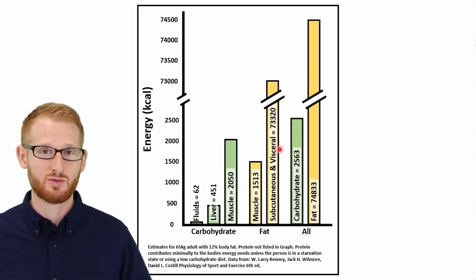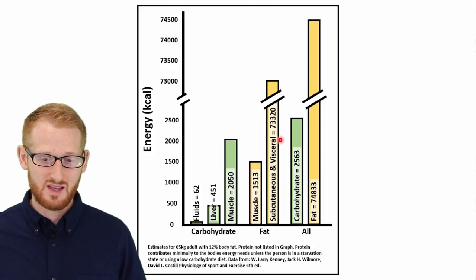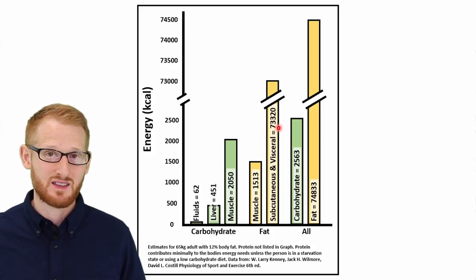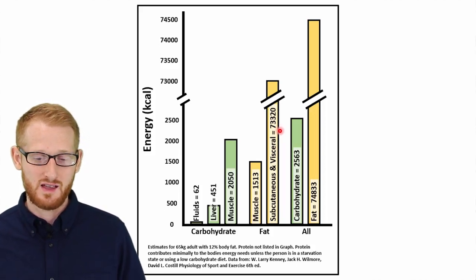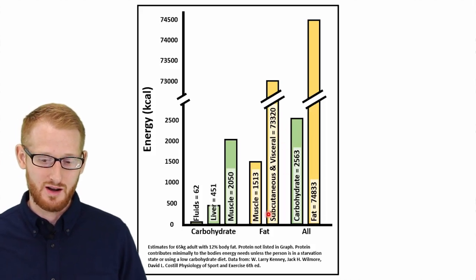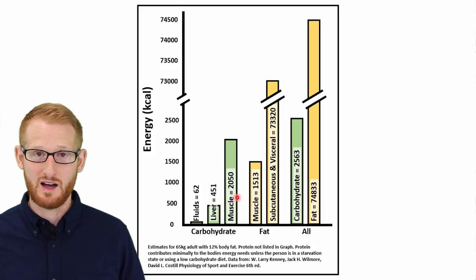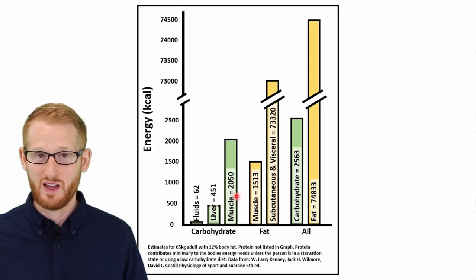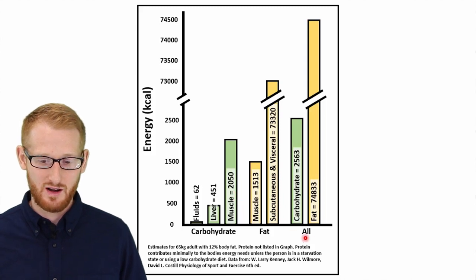Around 73,000 calories worth of fat is stored in our adipose tissue. Compare that to our muscle carbohydrates of about 2,000 calories — there's a lot more energy in our adipose tissue. If we compare the sources of all carbohydrates versus all fats, carbohydrates come to around 2,500 kilocalories, while fats come to around 75,000 kilocalories.